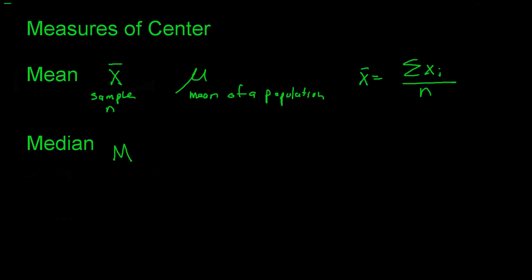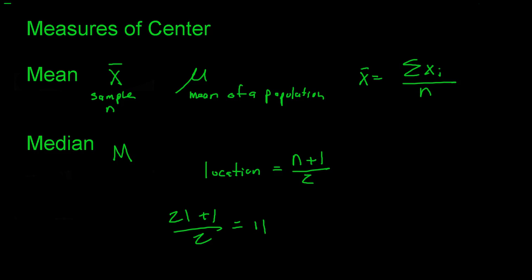There's no simple formula for the median, but to find the location of the median — not the median itself — you take your sample size plus one divided by two. This tells you what position your median is at. For example, if you have 21 values, then (21+1)/2 = 11, so the median is at the 11th position, as long as your data is in order.